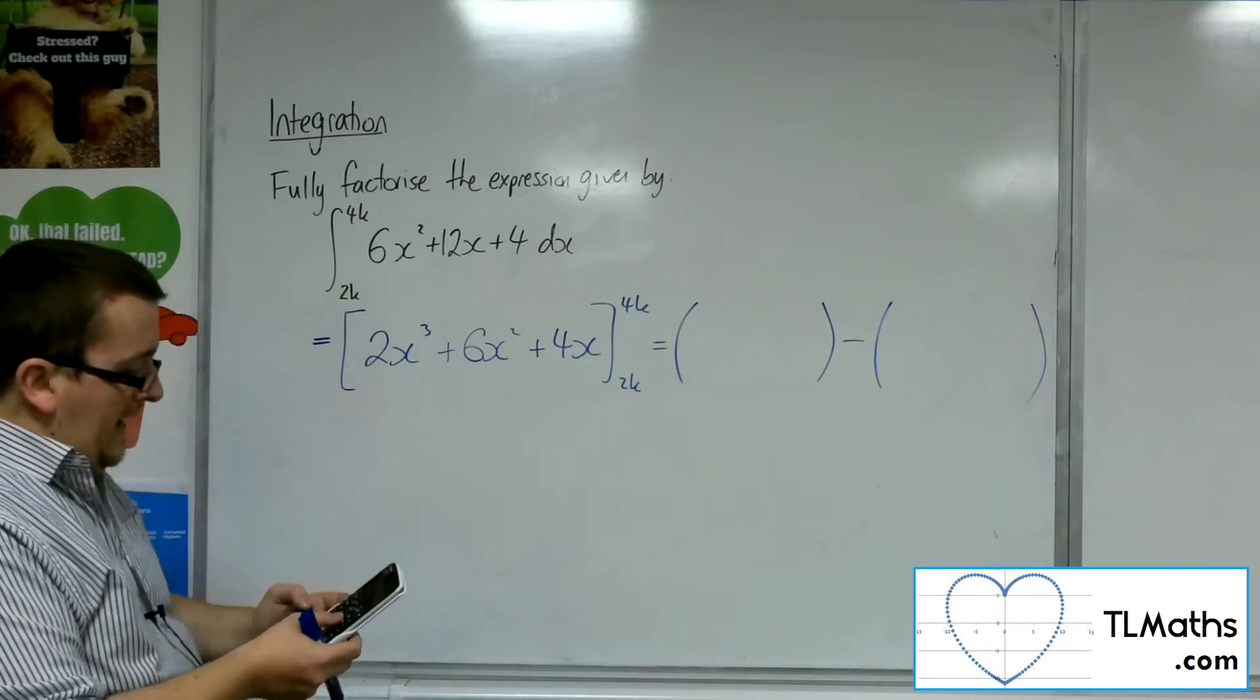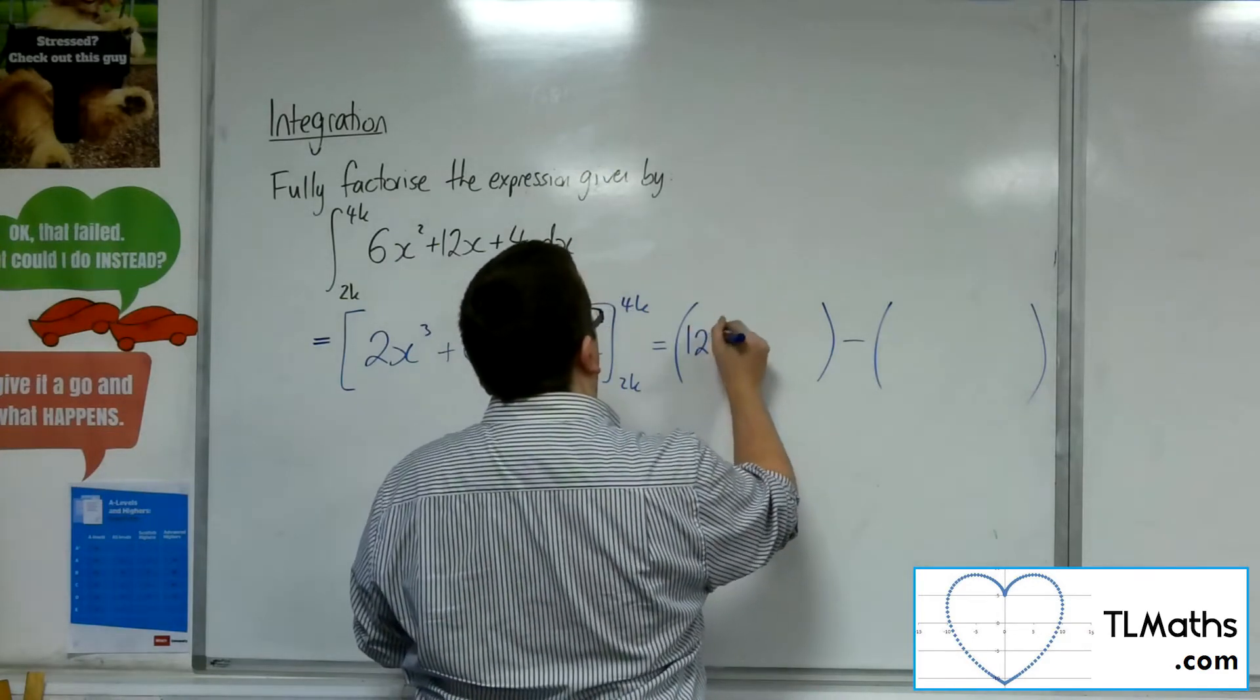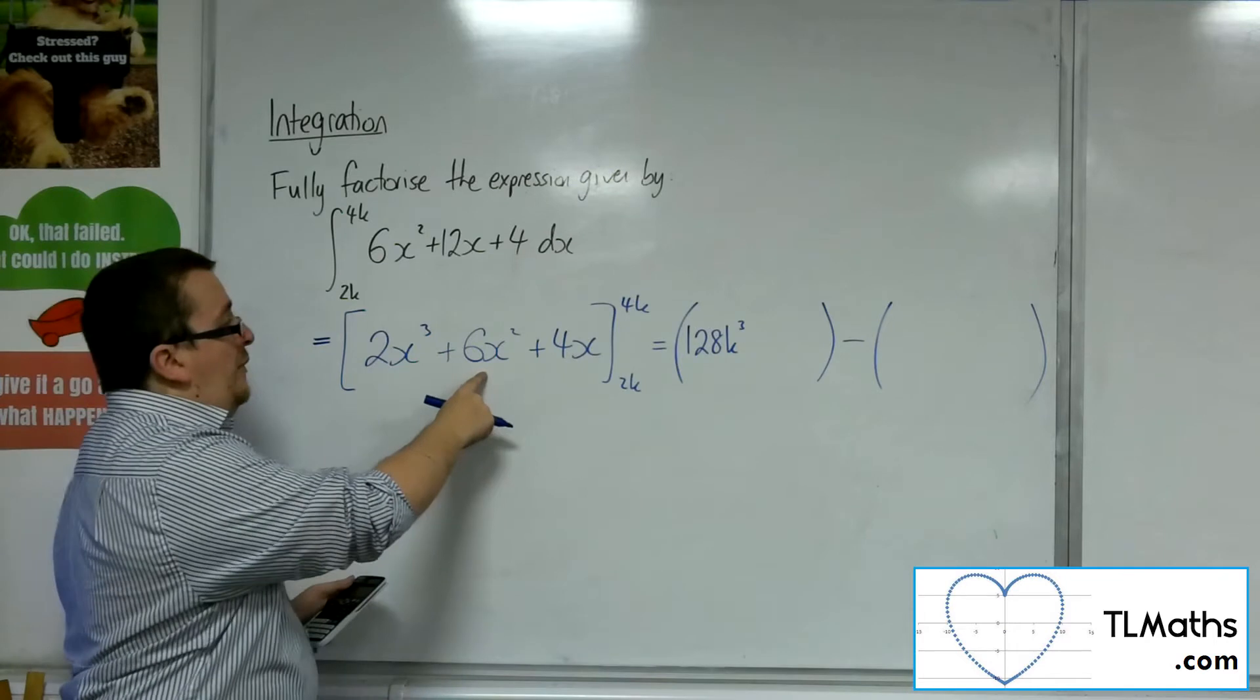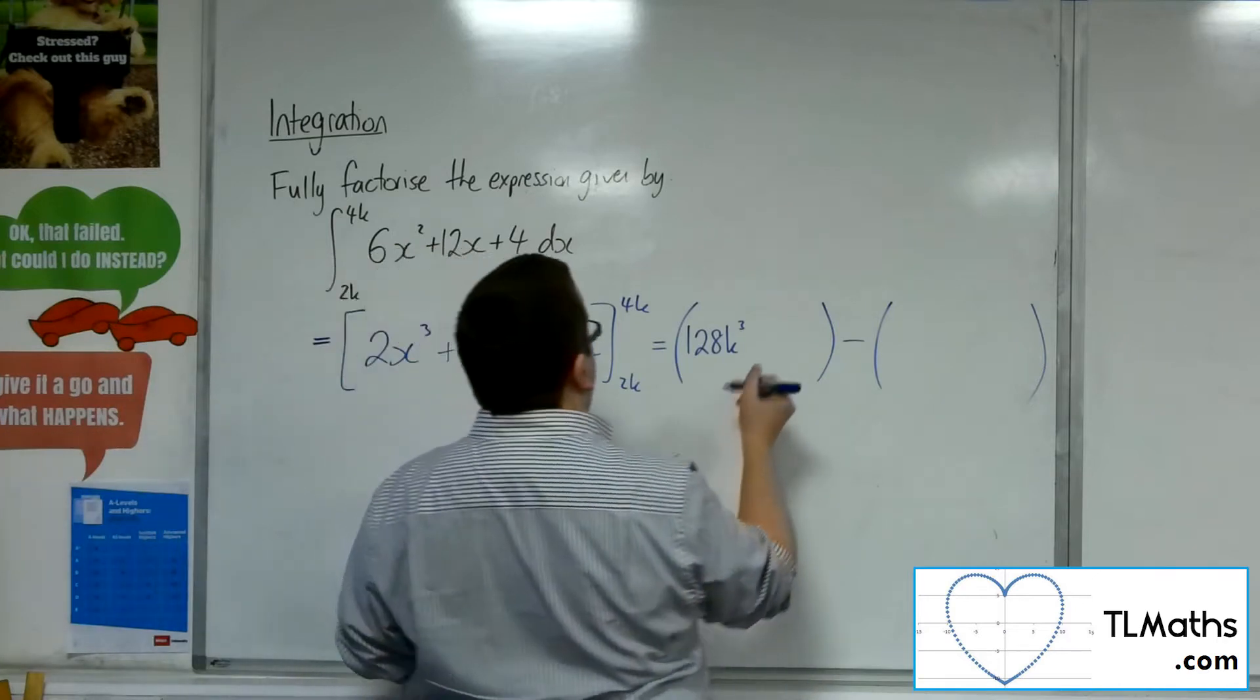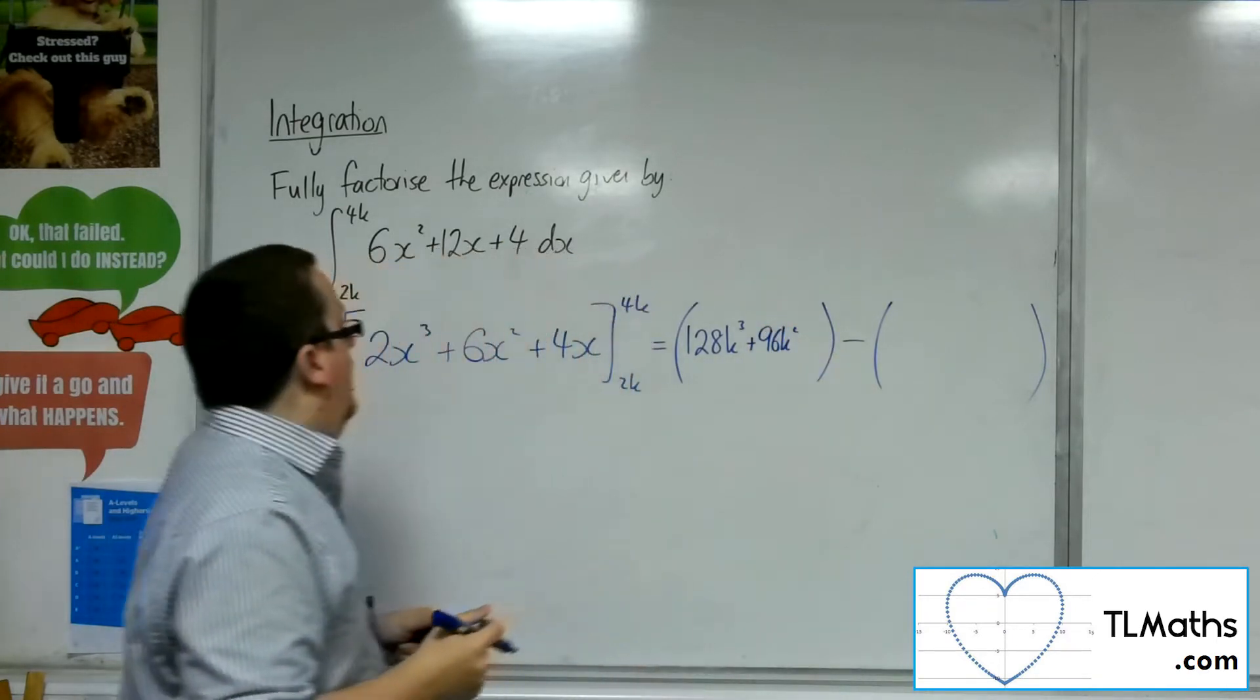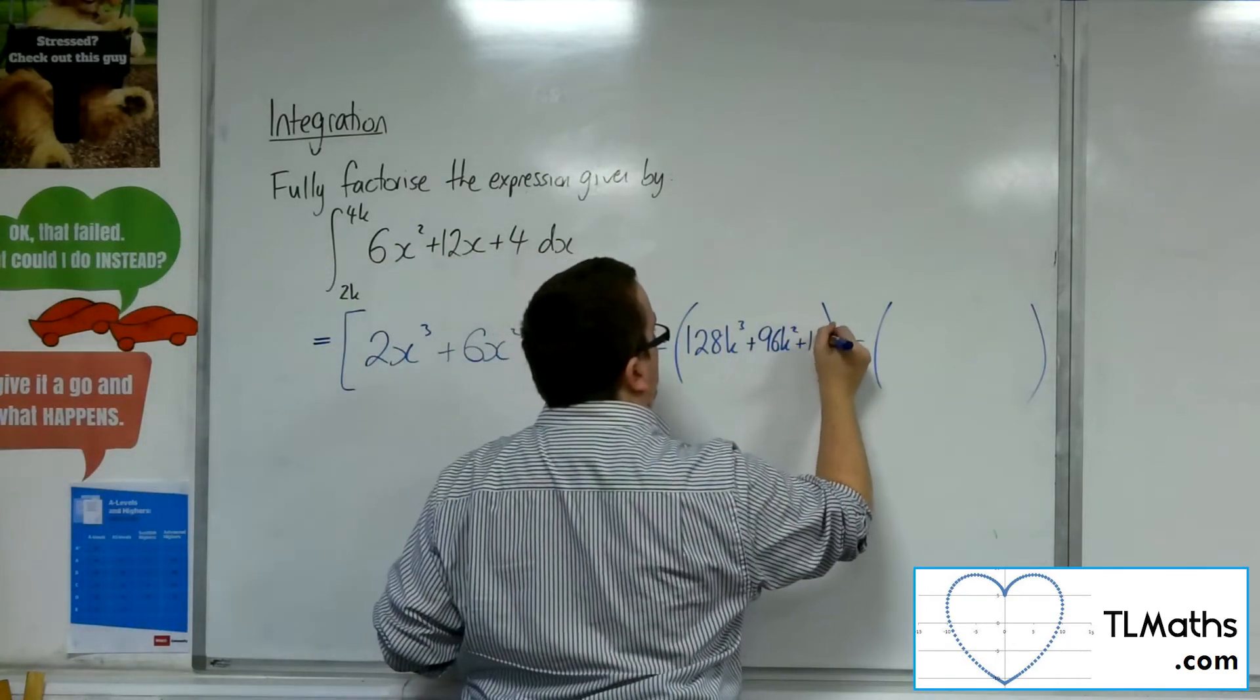So 4k cubed. So 4 cubed, then double that. So we've got 128k cubed. 6 lots of 4k squared, so 4 squared. So we're going to have 16 times 6, so 96k squared. And then 4 lots of 4k, so 16k.